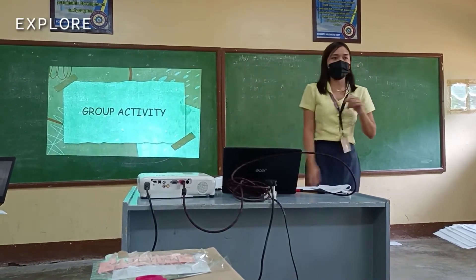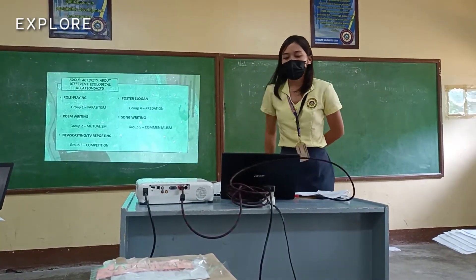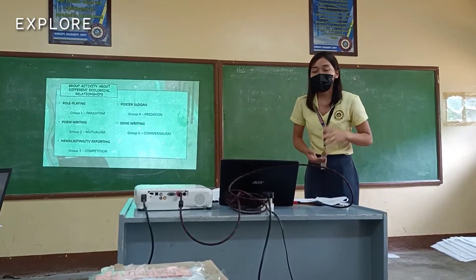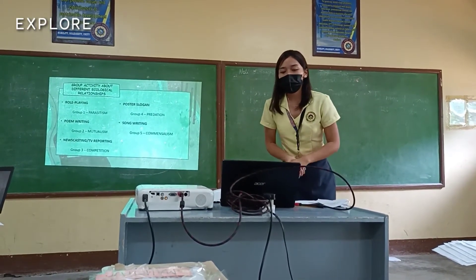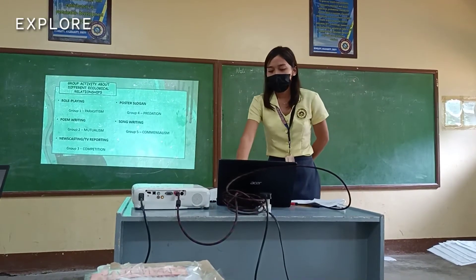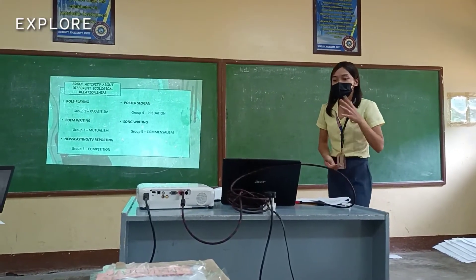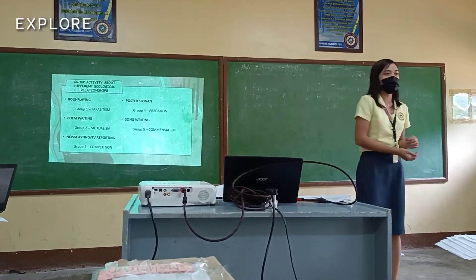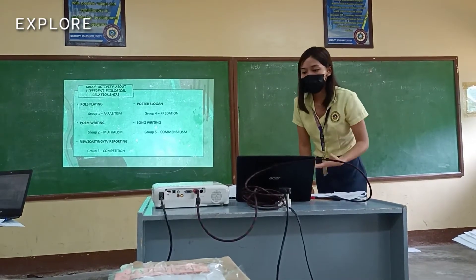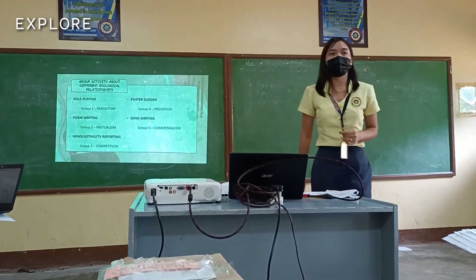Now I want you to group yourselves into five. Each group has different tasks to accomplish. The first group will demonstrate or present parasitism through role-playing. The second group will write a poem that describes mutualism. The third group will do a newscasting or TV reporting that demonstrates competition. The fourth group will create a poster slogan demonstrating predation. And the fifth group will compose a song describing commensalism.